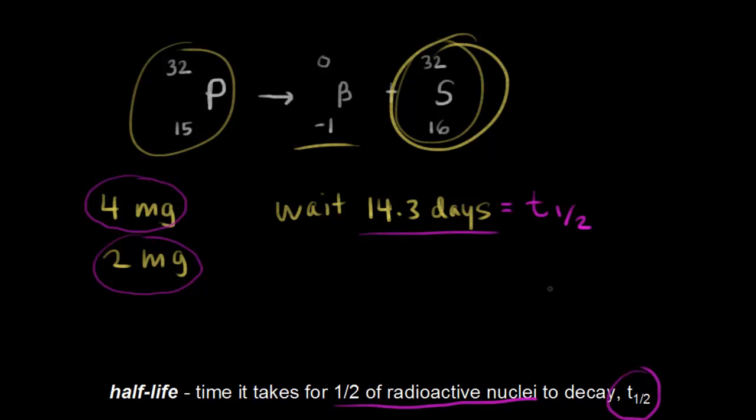The half-life depends on what you're talking about. If you're talking about uranium-238, the half-life is different. It's approximately 4.47 times 10 to the ninth in years, which is much longer than phosphorus-32.